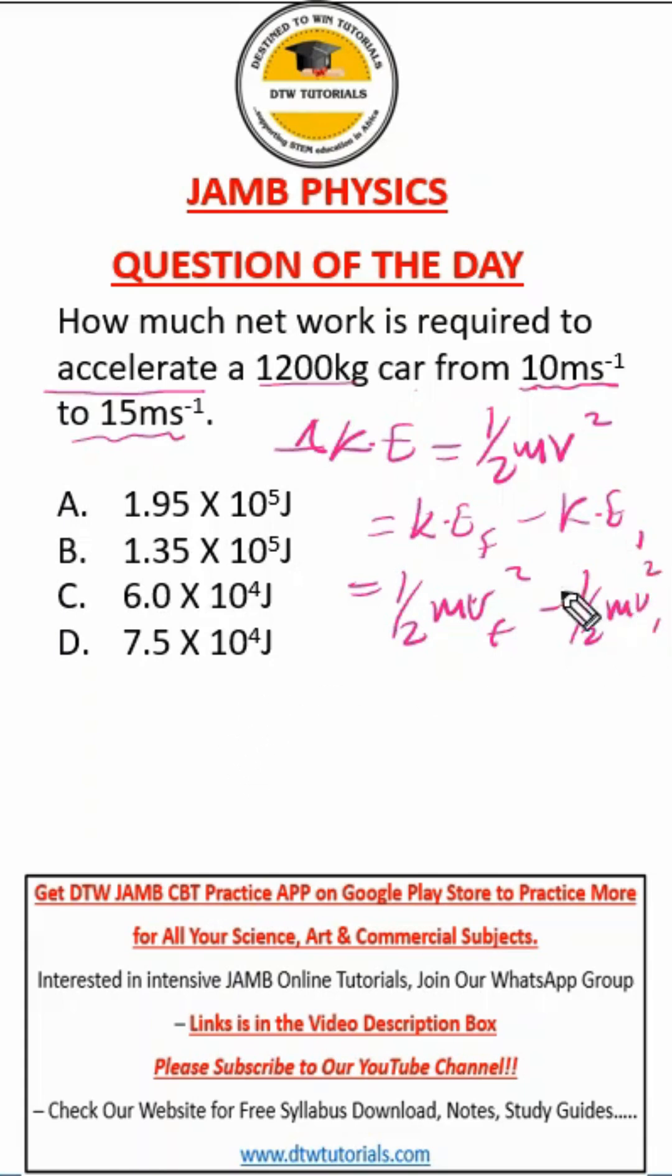From here you can easily do half, put m since they are the same, just collect like terms. Then in parentheses v squared f minus v squared i. From here we have half, what is the mass? The mass is 1200 kg.